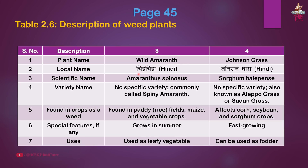Third weed: Wild amaranth. Local name: Chirchida in Hindi. Scientific name: Amaranthus spinosus. No specific variety. Commonly called Spiny amaranth. Found in paddy/rice fields, maize and vegetable crops. Special features: Grows in summer. Uses: Used as a leafy vegetable.